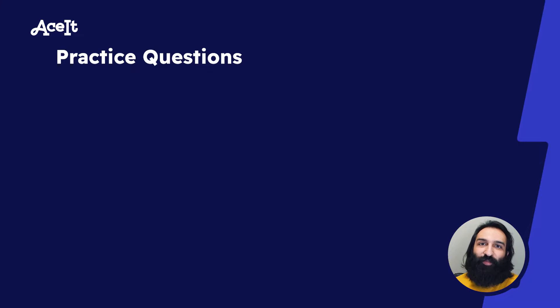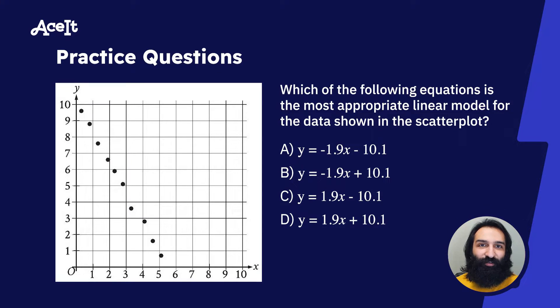Now that we've learned a little bit more about scatter plots and models, let's look at some problems from the SAT. Which of the following equations is the most appropriate linear model for the data shown in the scatter plot? Let's apply what we learned about slope-intercept form to answer this question.